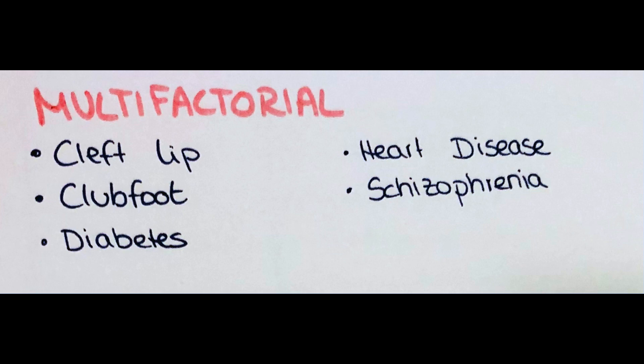Now I want to talk about multifactorial diseases like cleft lip. For cleft lip there is a genetic predisposition, but also different factors during pregnancy promote its development — such as if the mother drinks alcohol during pregnancy, smokes tobacco, has a poor diet leading to malnutrition of the embryo, or takes different medications.